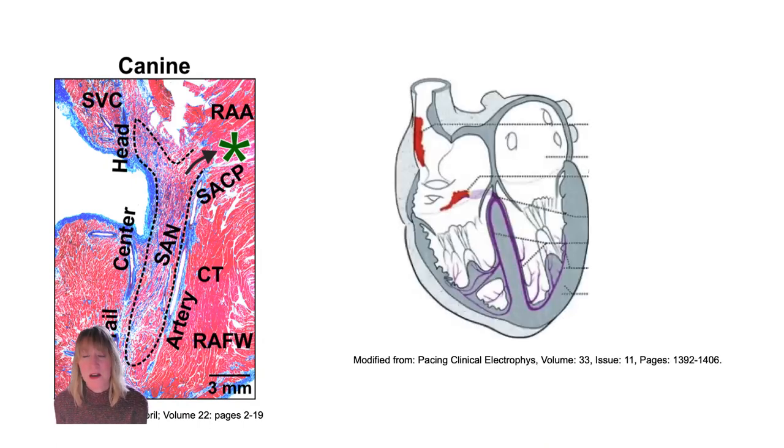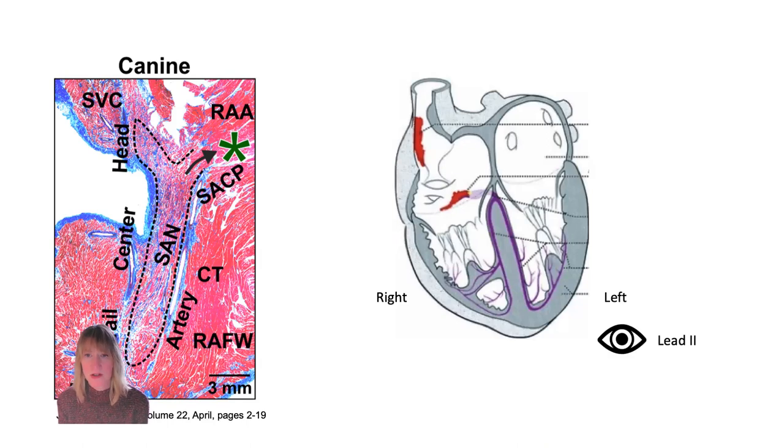If we look at this schematic here, we've sort of superimposed that cigar or banana-shaped SA node into a schematic of the heart, that red structure, and if we think about left and right labels of the sides of the heart, and if we think about lead two's perspective, so that's my eyeball. Lead two's perspective is from the left hind limb, that's the positive pole, and so I've sort of positioned the eyeball on the left side caudally, where lead two might be looking, if you will. And if we imagine a depolarization that breaks out of that SA node structure fairly dorsally, like where the green star is in that diagram, and then washes across the atria, it might produce a vector that is denoted by my purple arrow there, that is directed pretty straight towards that eyeball, and that's what's going to give us those taller P waves.